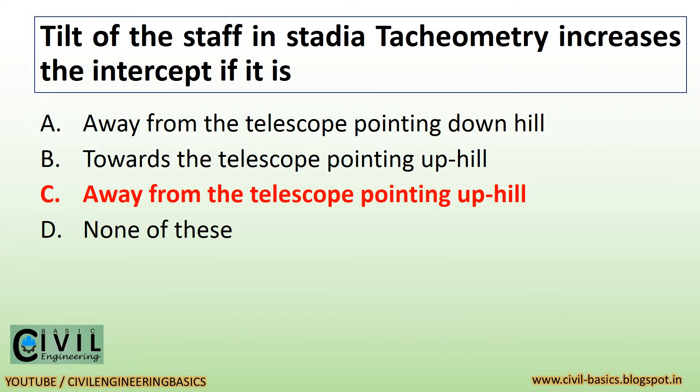Tilt of the staff in stadia tacheometry increases the intercept if it is away from the telescope, pointing uphill.